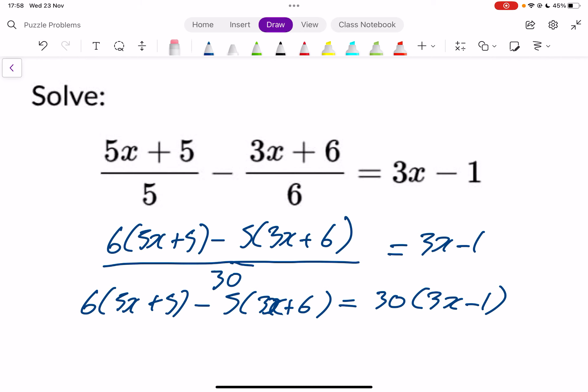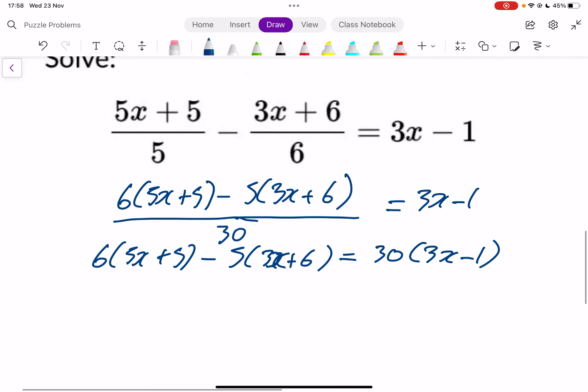So now we've got this equation, and just multiply it out. 6 times 5x is 30x. 6 times 5 is 30. And then just be careful here, it's minus 5 times 3x is minus 15x. And minus 5 times positive 6 will give you minus 30.